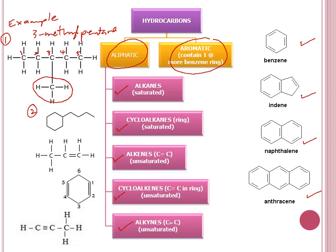The second one is cycloalkane. The longest chain would be cyclohexane and this is the substituent. Let's count how many carbons it has: one, two, three, four. So we put butyl in front of the parent.